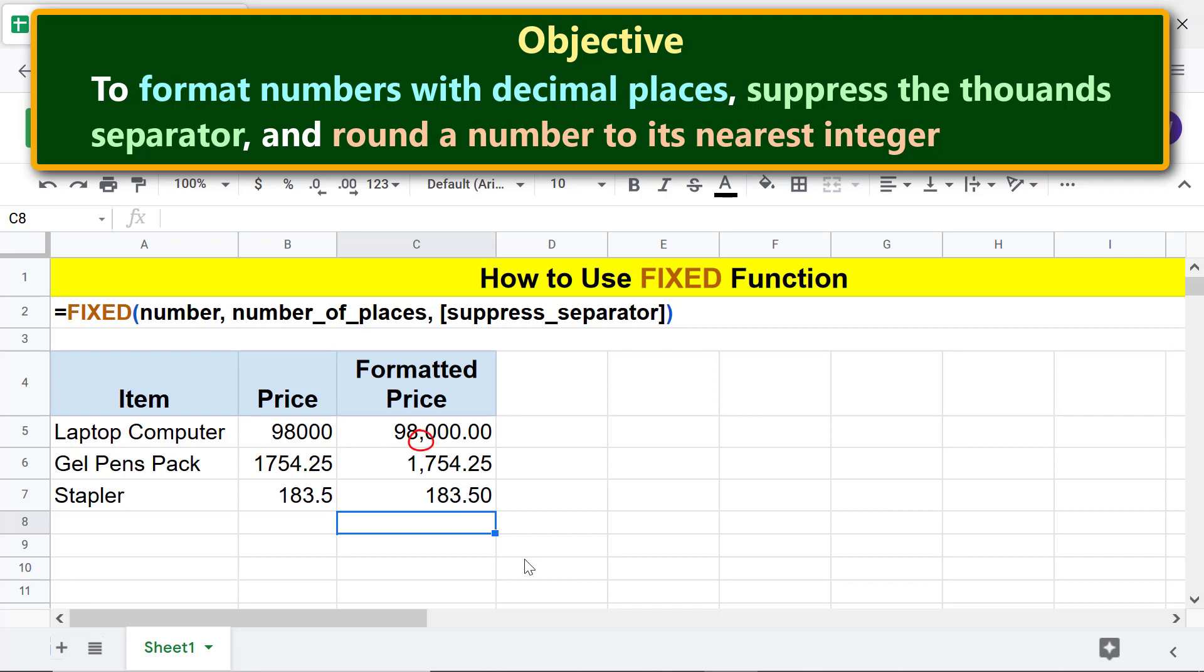Now let's suppress the thousands separator by setting the suppress separator attribute value to 1. Click this cell, edit the formula, click here and type comma, type 1, press Enter. There you go, the thousands separator is removed.